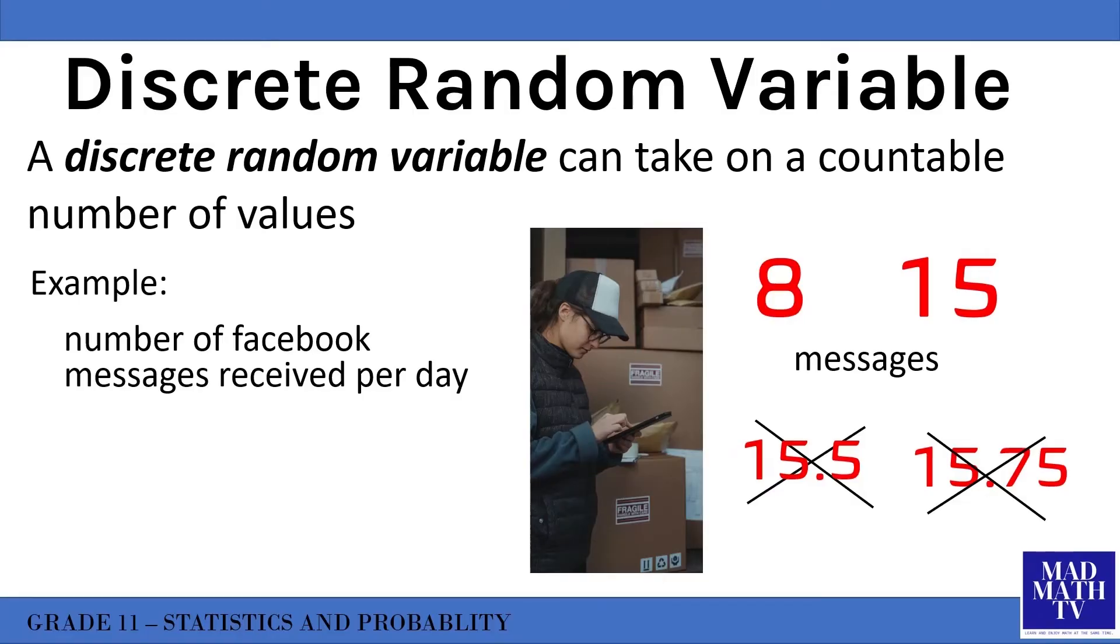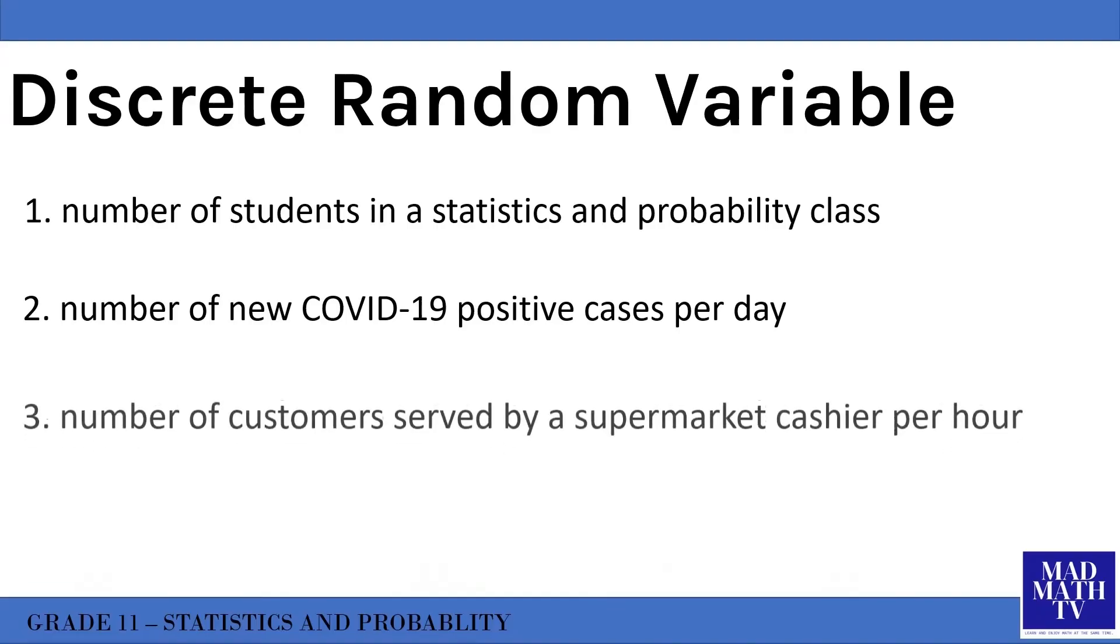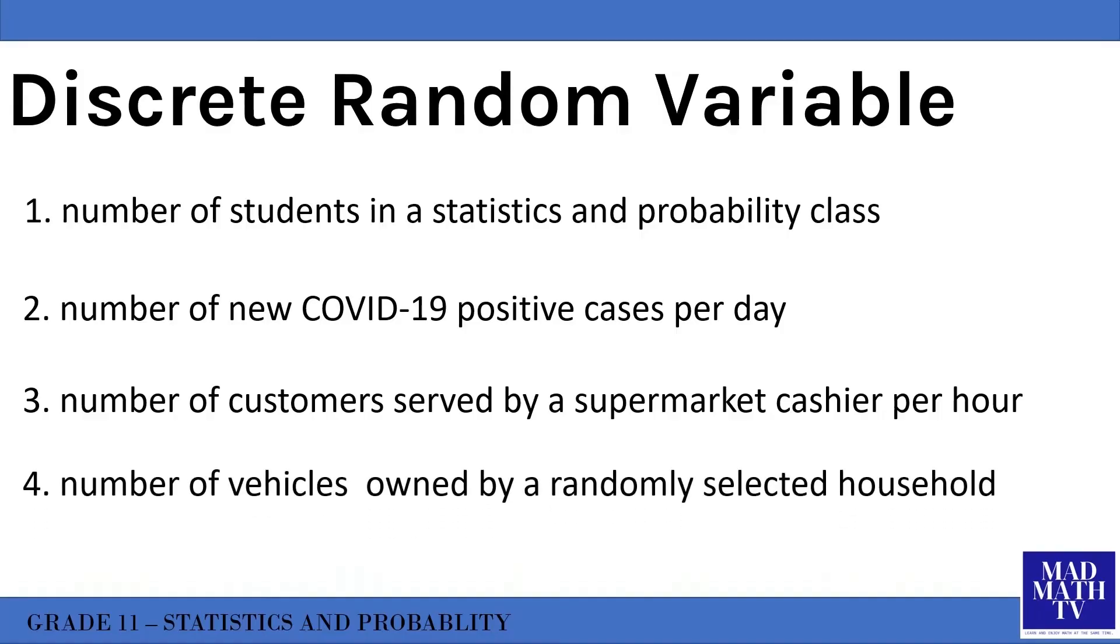Another example is the number of students in a statistics and probability class. Values such as 15, 25, 50 are all possible, however 25.5 students is not a possible value. Some other examples of discrete random variables are: the number of new COVID-19 positive cases per day, the number of customers served by a supermarket cashier per hour, and the number of vehicles owned by a randomly selected household. For as long as the outcome can be counted using the fingers in your hands, that is a discrete random variable.